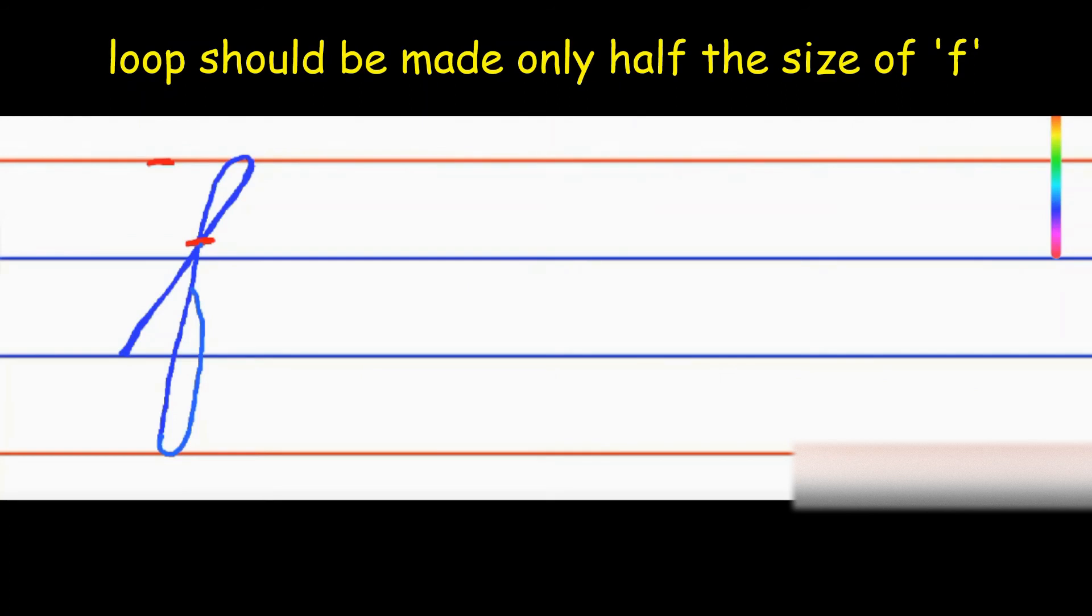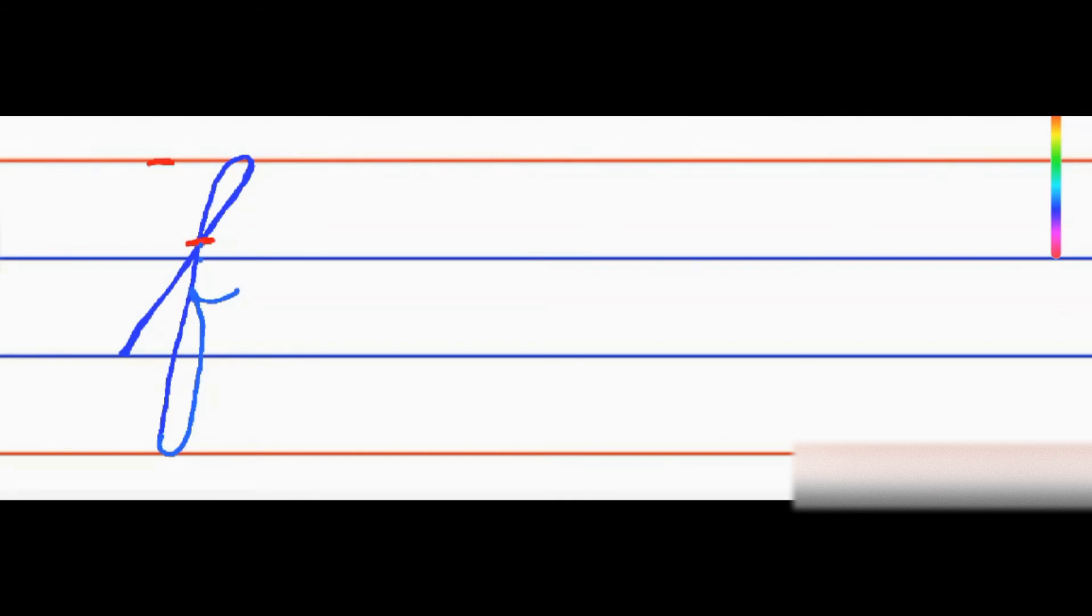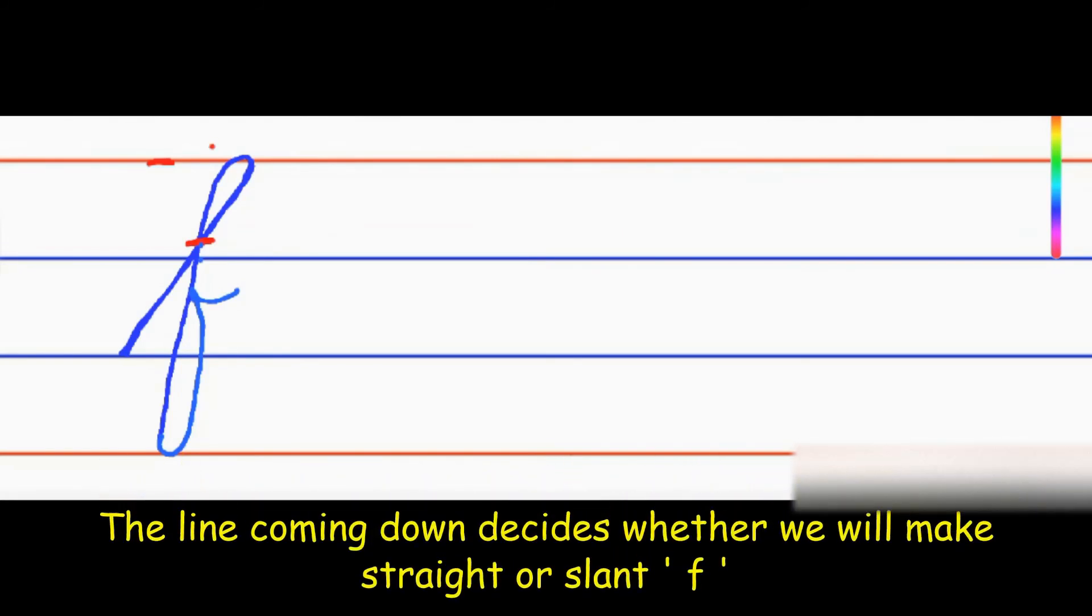But you're not going to go up till this height like the previous one. Just stop in between the two blue lines and pull out a tail. This is going to give a straight look because here we are coming down straight. This line mainly describes whether you're going to write straight cursive or slant cursive.